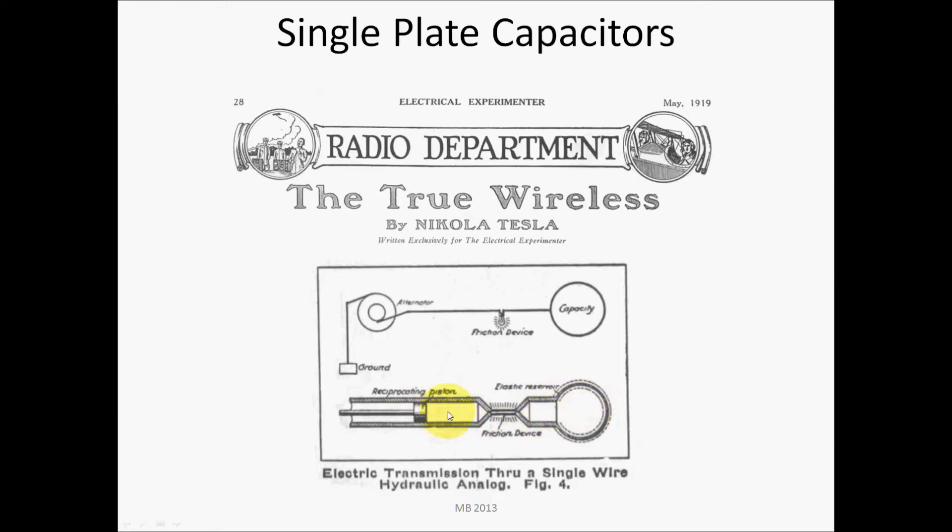So there's a place for the fluid to flow, and as the piston retracts, fluid can flow out of that elastic reservoir and back through the load. This was the pneumatic analogy of what a single plate capacitor would do in an electrical circuit.